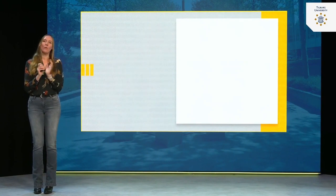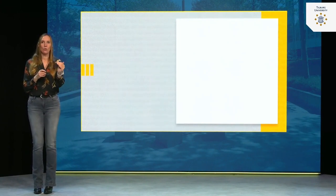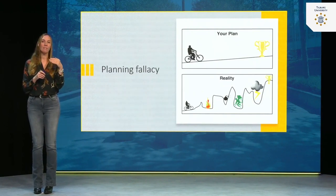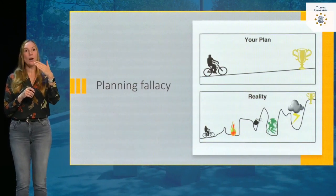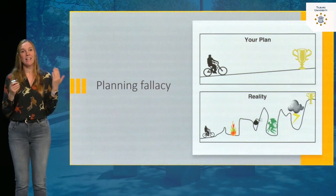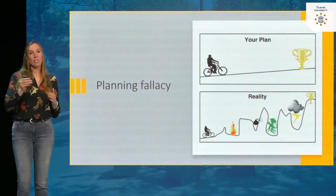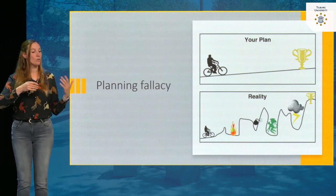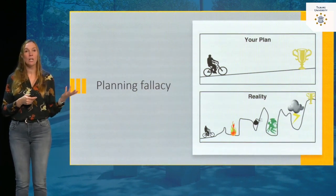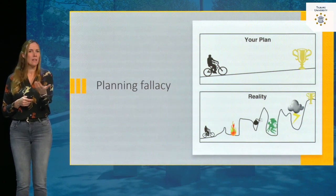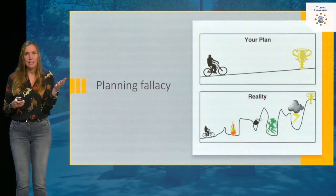We spend quite some time trying to control things we cannot control. Ironically, when it comes to things we actually can control, we make mistakes too. This is illustrated by the planning fallacy — we overestimate how quickly we can wrap up a project. For example, early in this course you might think: 'I'll just watch the lectures, read the book, do the exam, and everything will be fine.' You may even postpone watching lectures, thinking you can easily do it in the three weeks before the exam.